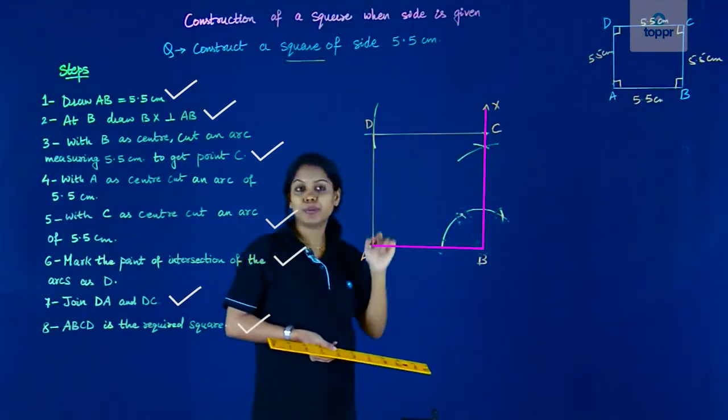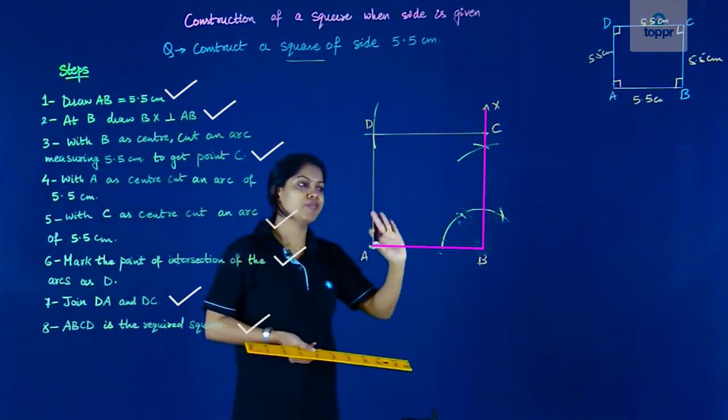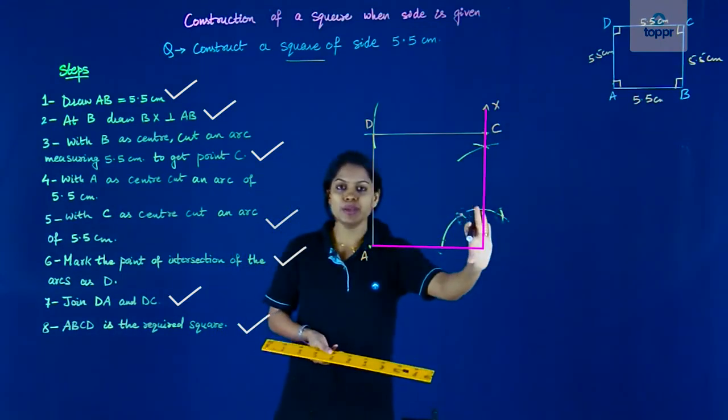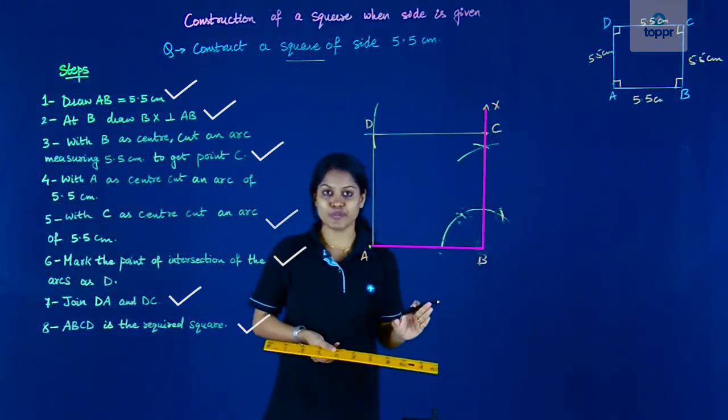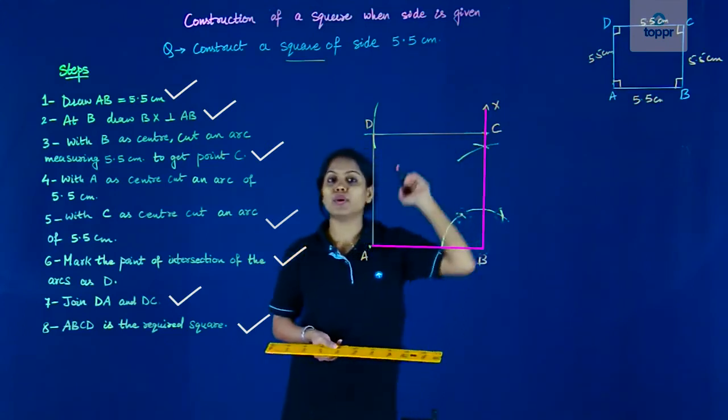C is at a distance of 5.5 because CB is 5.5. So with the center as B, we cut an arc of 5.5 measure and we named that point as C.